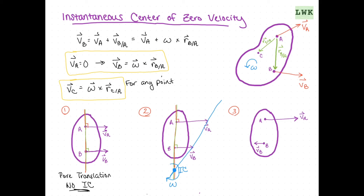In the last example, we take our red line perpendicular to VA and our green line perpendicular to VB. We then use a blue line to connect our vector heads. This allows us to identify a point on the object itself as our instantaneous center, IC.